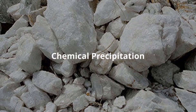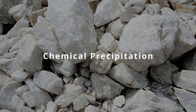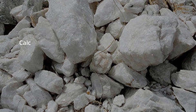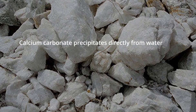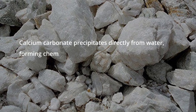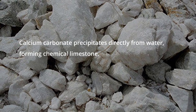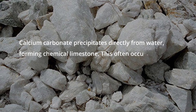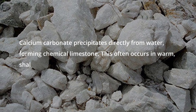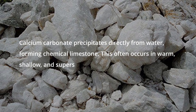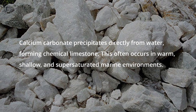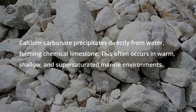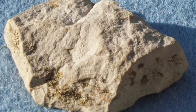Another process is chemical precipitation, where calcium carbonate precipitates directly from water, forming chemical limestone. This often occurs in warm, shallow, and supersaturated marine environments. Limestone is often porous.